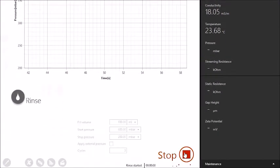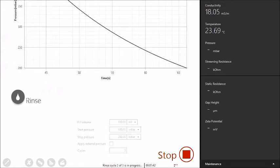Use the rinse cycle to adjust the gap between the sample and the reference film, while filling the cell with measuring liquid.